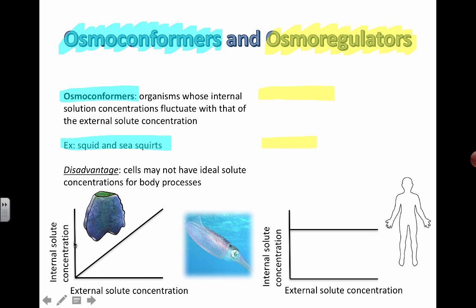If you plot this on a graph, the internal concentration of organisms like squids and sea squirts tracks the external solute concentration — if the external concentration increases, the internal concentration increases as well. The main disadvantage is you don't have any control of what's going on inside you, and that may not have the ideal effect on your metabolic processes.